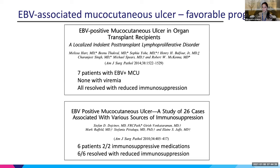The bottom case series had 26 patients who were immunosuppressed for various reasons — some HIV, some just old age. Six of the patients were on immunosuppressive medications and all of them resolved with reduction of immunosuppression, again suggesting a favorable prognosis.